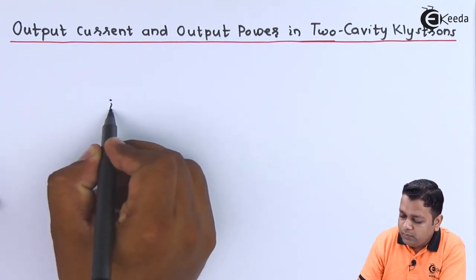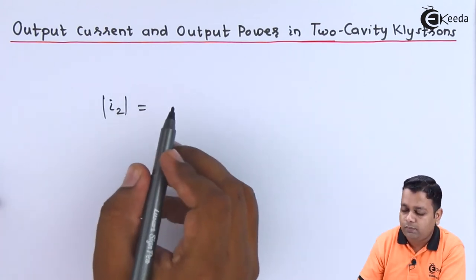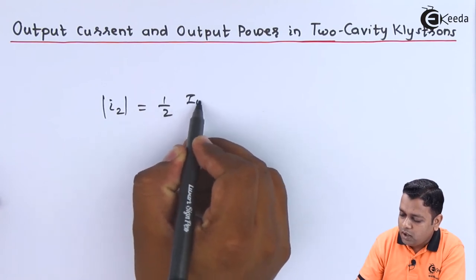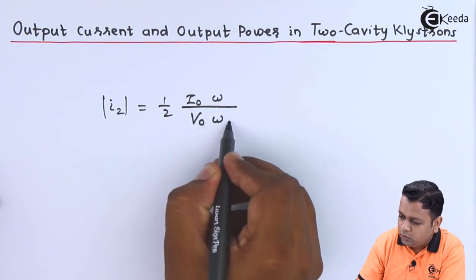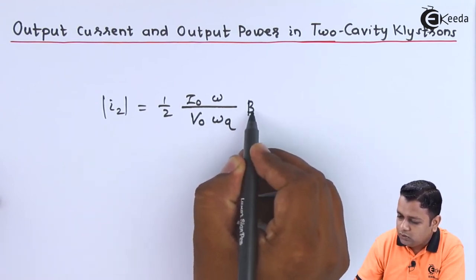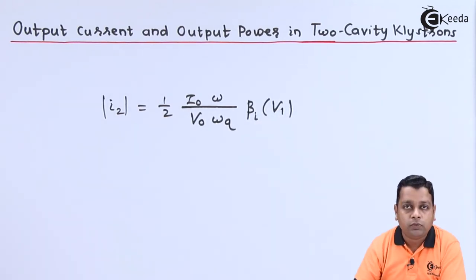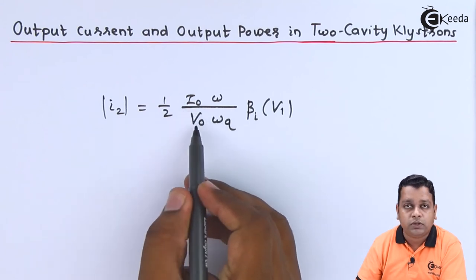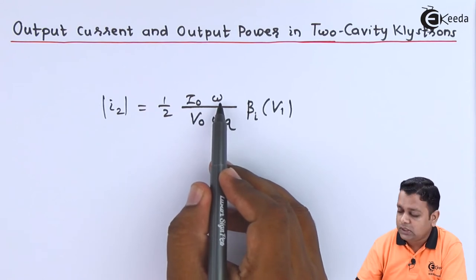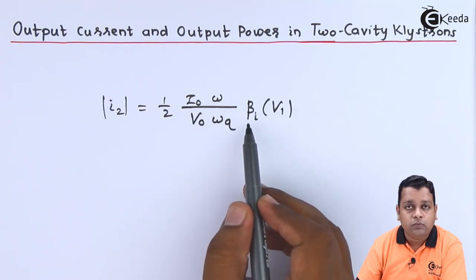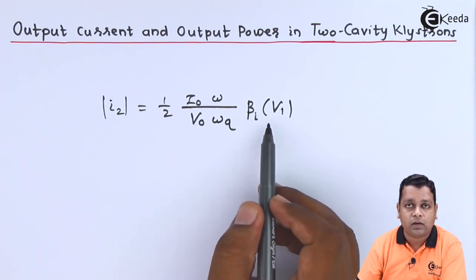So the induced current will be denoted by I2. I take the mod representation here and it will be simply 1/2 times I0 times omega divided by V0 times omega_Q in multiplication to beta_I mod of V1. In this formula we have I0 as beam current, V0 the potential across the two electrodes, omega as the angular frequency, beta_I as the input cavity beam coupling coefficient, and V1 is the magnitude of the RF voltage applied for amplification.